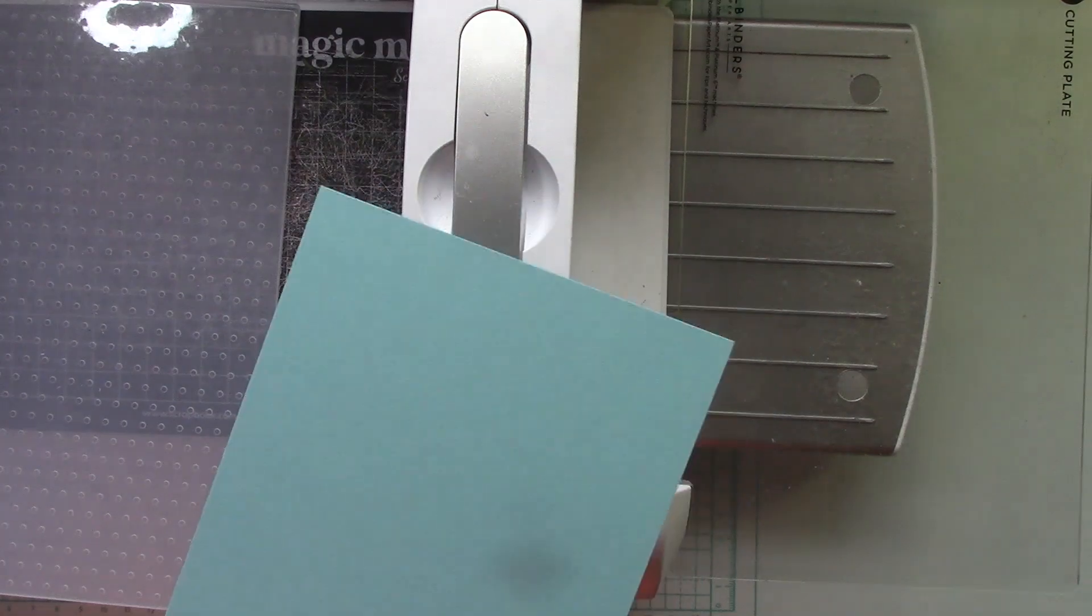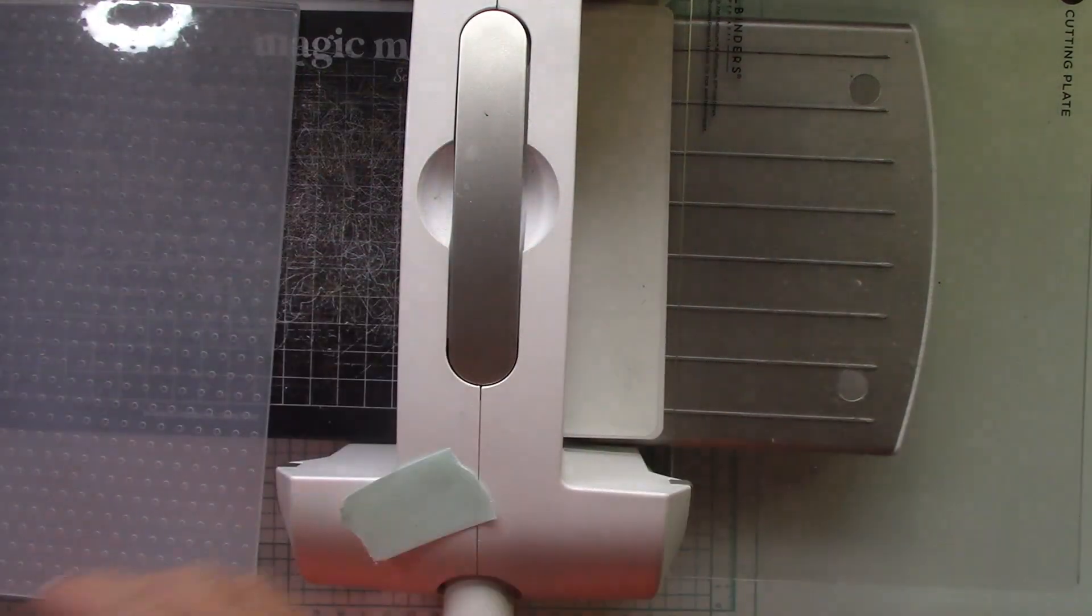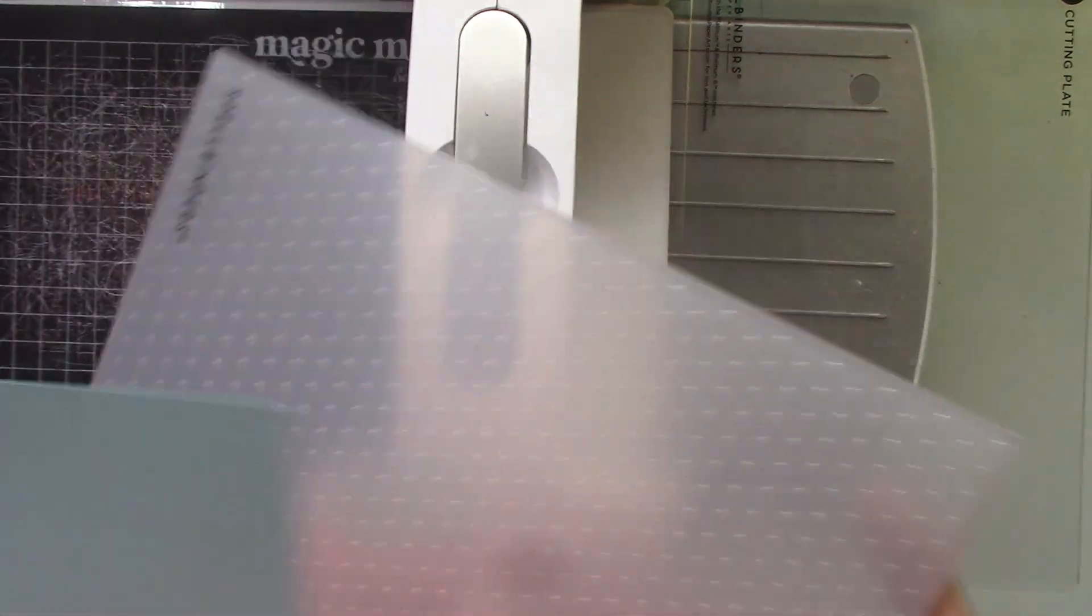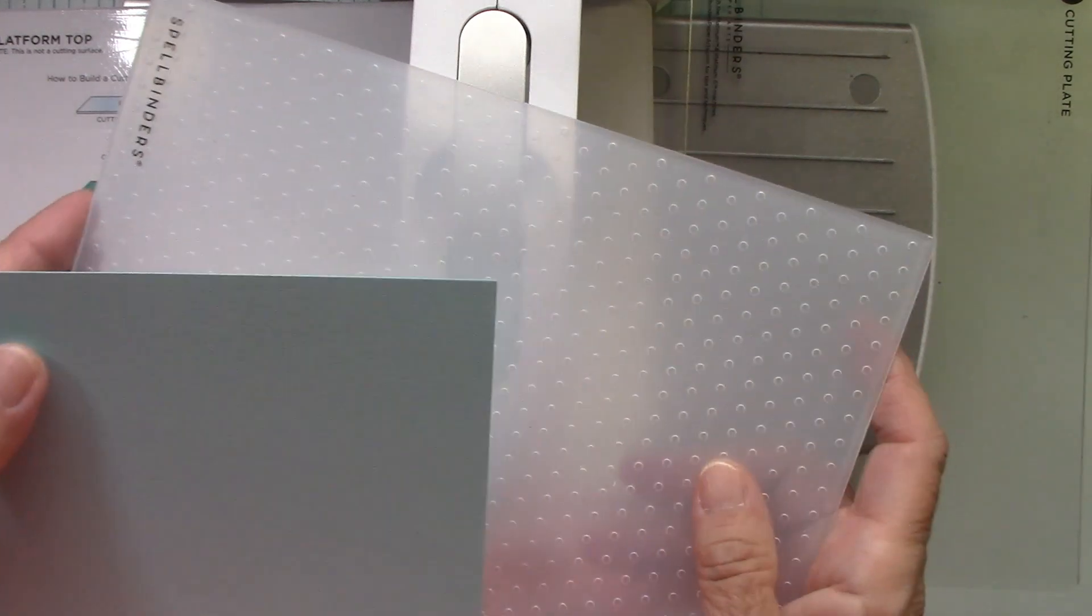I have a black piece that is five and three eighths by four and a quarter. This is actually Gina K's sea glass. I love this color and I'm going to use this is a regular embossing folder. It's just the dots.